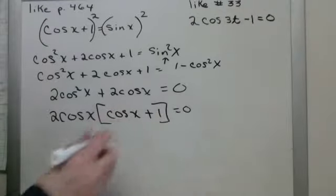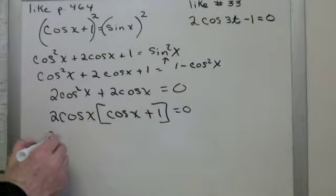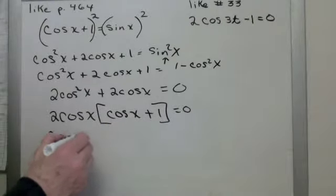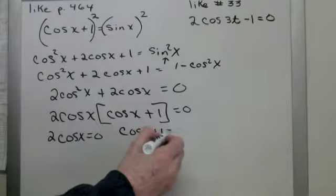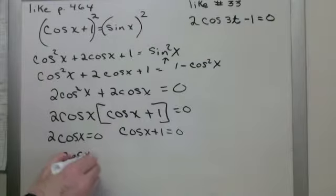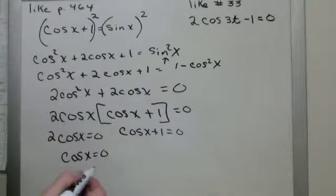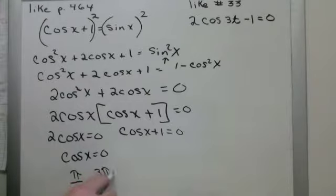Now I can solve each part. I can set each part equal to 0. So 2 cosine x equals 0 and cosine x plus 1 equals 0. This one's easy. Divide by 2, you get cosine x equals 0. And where does cosine equal 0? You're going to come up with pi over 2 and 3 pi over 2.